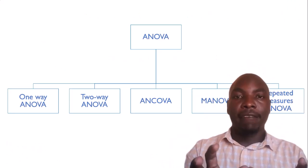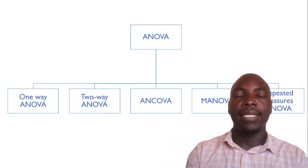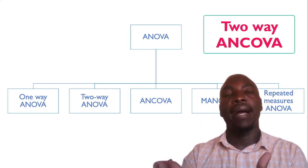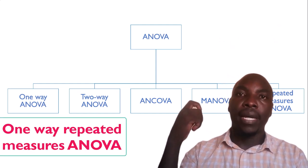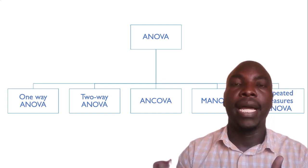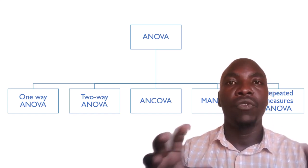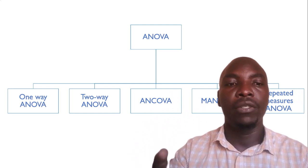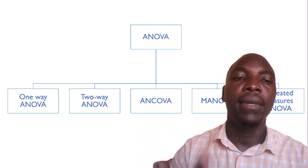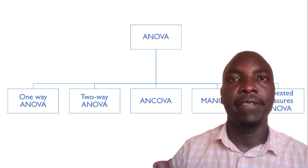What we've covered today are the basic terms. Once you understand these, the combinations will always make sense and you'll be able to do the analysis, interpret, and report your findings. Next we are going to learn how to run each of these types of ANOVA, how to interpret them, and how to report the results. See you in the next video.